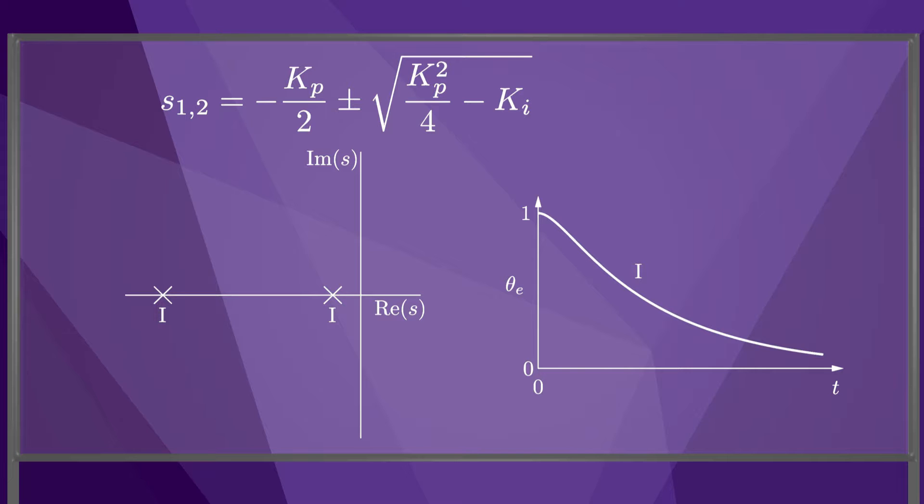If we increase the gain Ki until it equals Kp squared over four, so that the term in the square root is zero, we get a critically damped response, indicated as two.